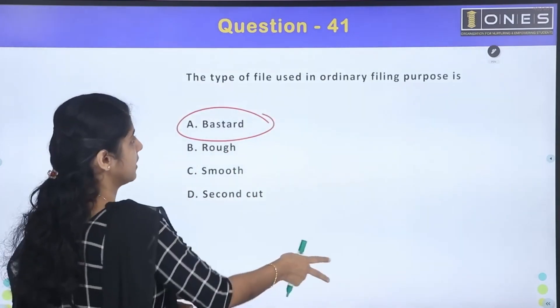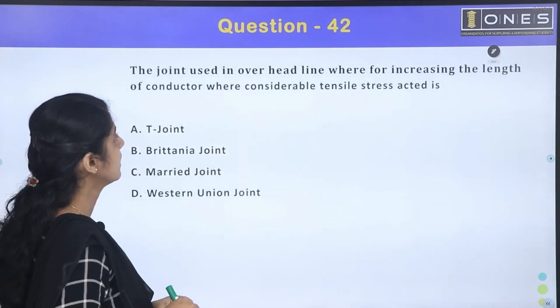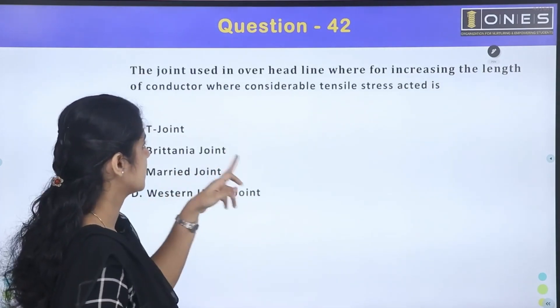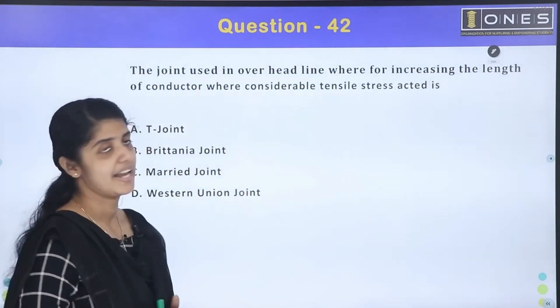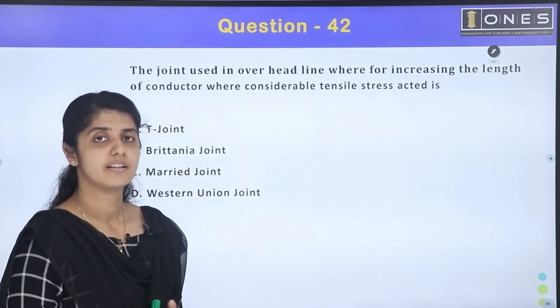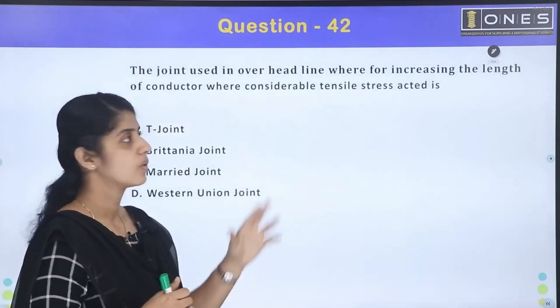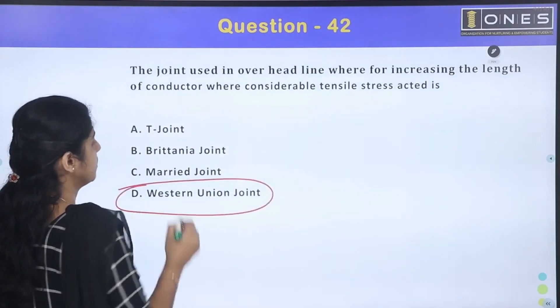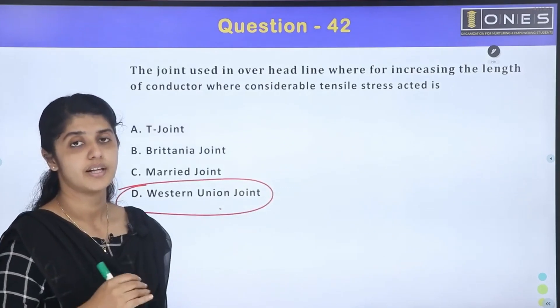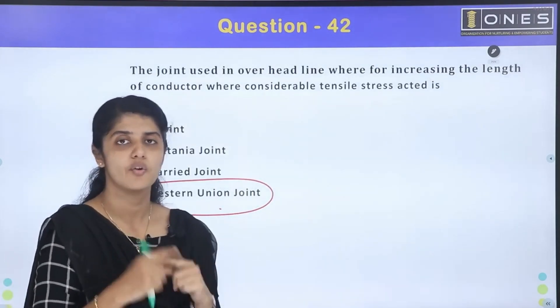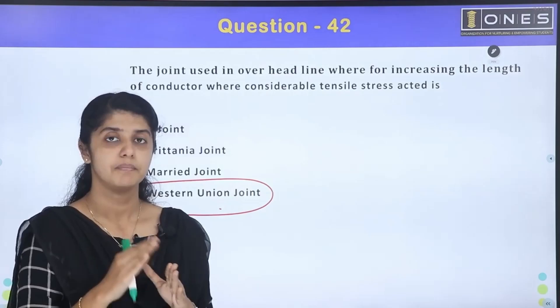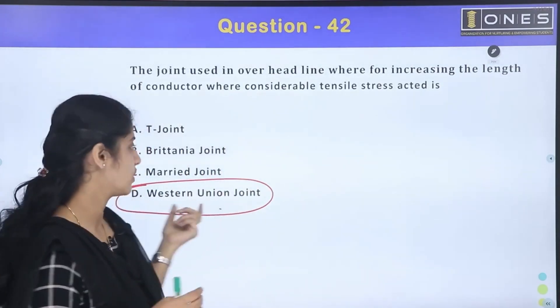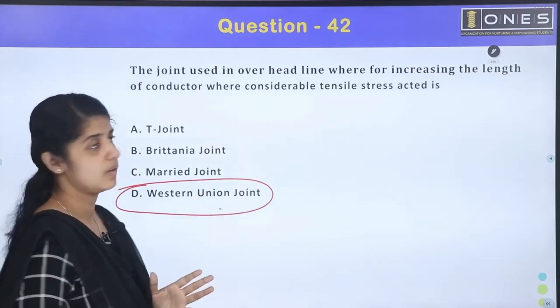The next question: The joint used in overhead line where for increasing the length of conductor where considerable tensile stress acted. In the overhead line, the tensile stress is used in the hood. This joint is used as Western Union joints. There are different types of joints, different underwire joints. In the overhead line, the tensile stress is used as Western Union joint.